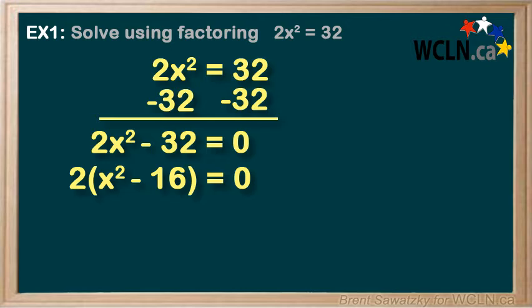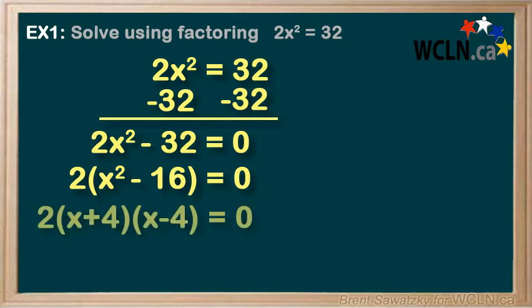But we also recognize that we could go a step further and we could see difference of squares here. So 2(x plus 4)(x minus 4) equals 0. So that's fully factored. Good to head on to the next step.